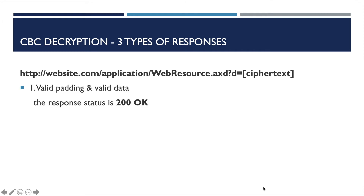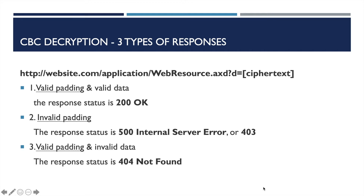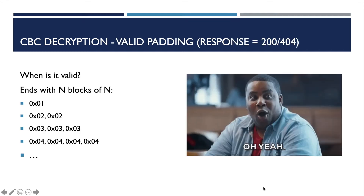The first is a 200 response, which indicates valid padding and valid data. The second is a 500 or 403 response, which indicates invalid padding. The third is a 404 response, which indicates valid padding and invalid data. If the padding is valid, which will return either 200 or 404, recall our definition of valid padding — that is, the message ends with n blocks of n. Therefore, now we know what the plain text looks like.